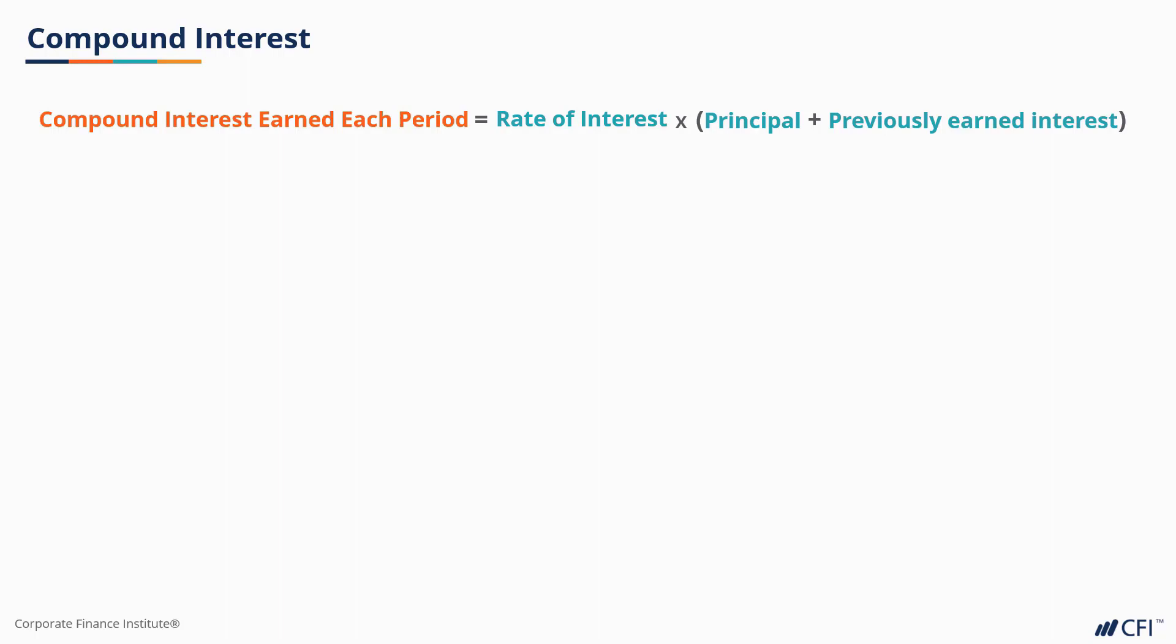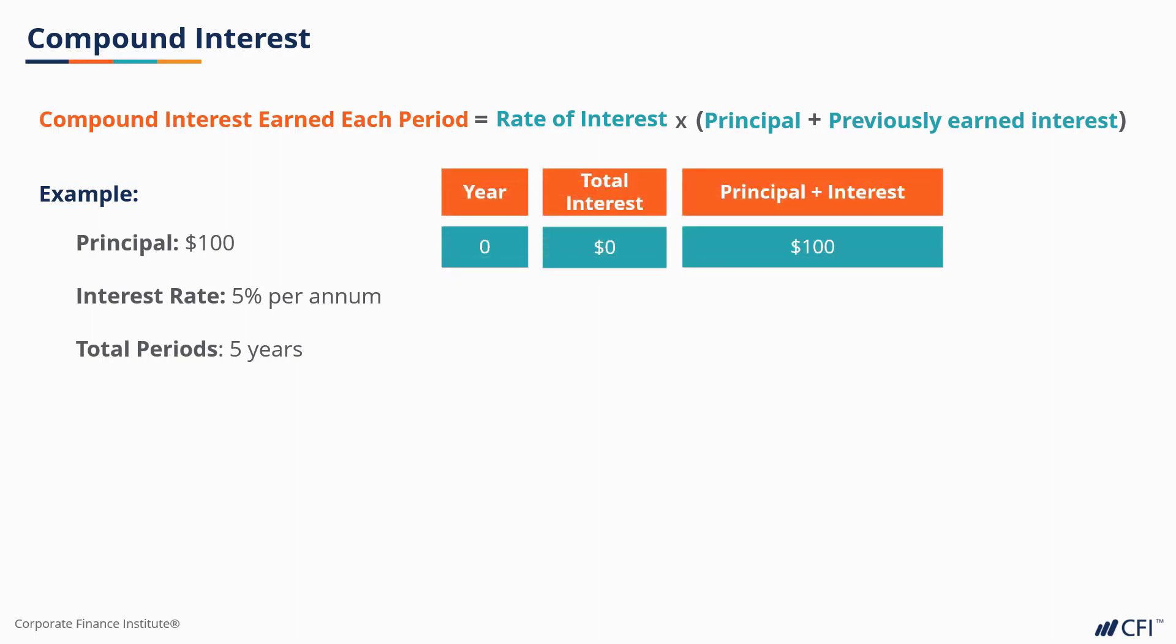It might be easier to understand if we use an example. Let's look at the same $100 principal amount, an interest rate of 5%, and a 5-year term. The cash flows would look like this. For year 1, you would earn $5 interest on your original principal.